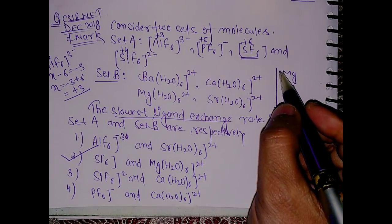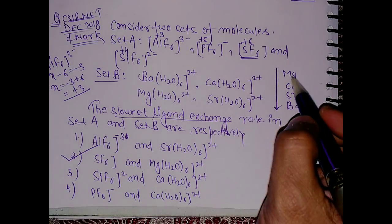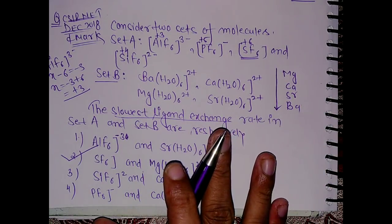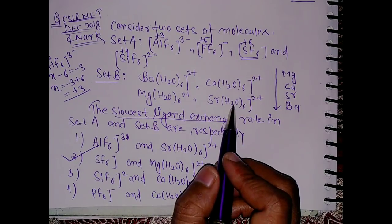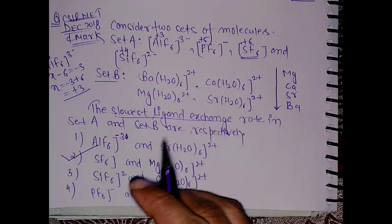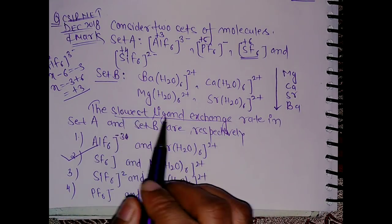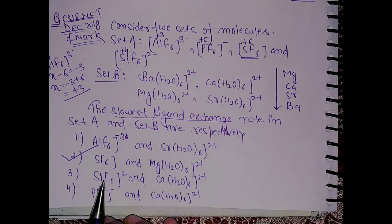I am telling one more time: as we go from top to bottom, the size of this central atom is increasing. So what will happen? The distance of the ligand from this central atom will increase and it will be very easy for the ligand to get dissociated and participate in the ligand exchange mechanism.